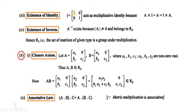Existence of identity: this is a second order diagonal matrix. So yahan diagonal pe hamare paas same elements hai, aur woh element one hai. So this diagonal matrix is called the unit matrix. This matrix serves as the identity matrix in R2. I is equal to [1, 0; 0, 1], the multiplicative identity, because if we multiply A with identity or identity with A, in both cases we get A. That is, I — the unit matrix — is the identity matrix in set R2.